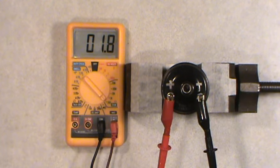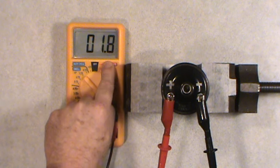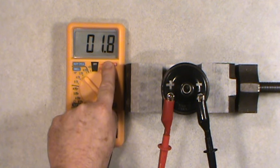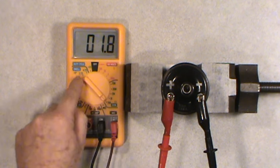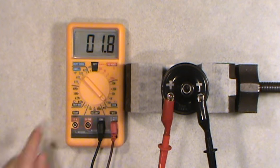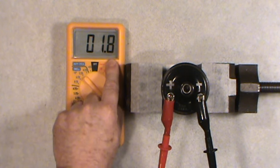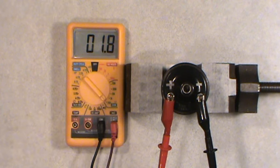So now on the primary side, we are showing a reading of 1.8 ohms. Now remember we have to subtract 0.3 ohms because of that miscalibration of this meter. So 1.8 minus 0.3 is 1.5 ohms.